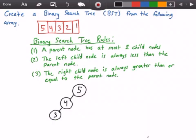Next we insert 2. We check to see if 2 is less than 5 and it is, so it goes to the left. Then we check to see if 2 is less than 4, so we go to the left. Then we check to see if 2 is less than 3 and it is, so we go to the left of 3 and insert our value 2.